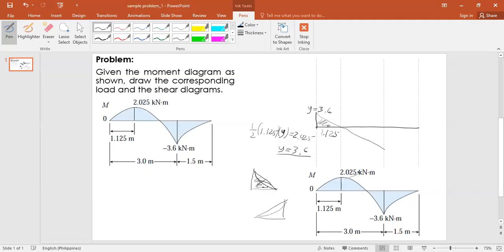Y equals 3.6. Now for this one, for this distance, since 3 minus 1.125 is equal to 1.875. Which means the area here is equal to the drop in moment.